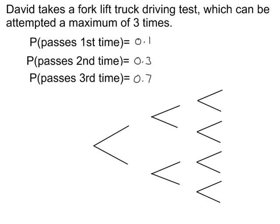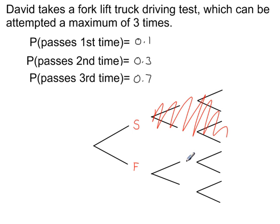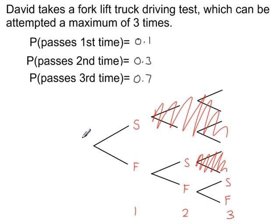This probability tree is incorrect. The problem with this is — using S for success (he's passed) and F for failure (he didn't pass) — if he's successful and has passed the test, why would he be doing the test again? So you can see from this tree diagram, certain branches shouldn't be there. If you've got success, he's not going to do the test again. So the correct structure has his first attempt, second attempt, and on his third attempt he could have success or failure.